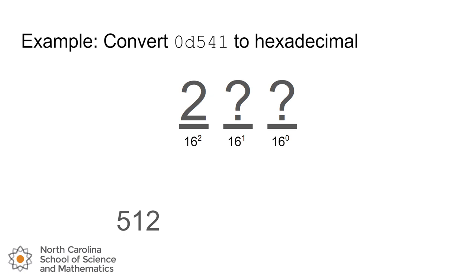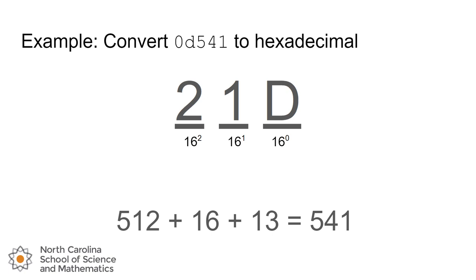We can do the same thing with hexadecimal. If we have the decimal number 541, there are two groups of 16 squared. 16 squared is 256. There are two groups of that that fit into 541, because that would be 512. That means that we have a remaining value of 29 that we need to account for. If we need 29, I know I can do that with one group of 16. That gets me up to 528. And now we have a remaining 13 that we need to account for with the last position. And 13 has its own character in hexadecimal. It's the character D. So 2, 1, D is equivalent to 541 in decimal.